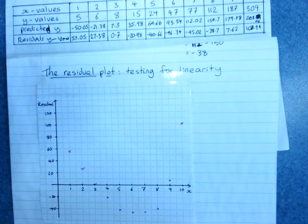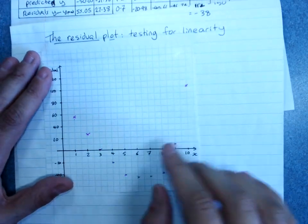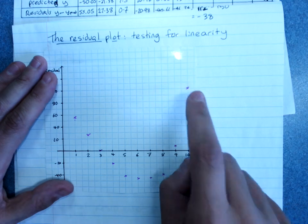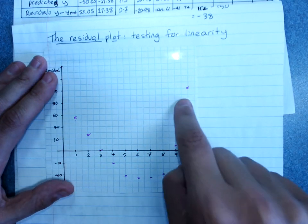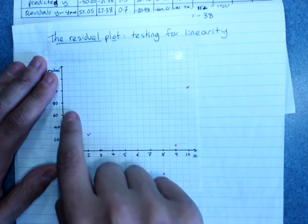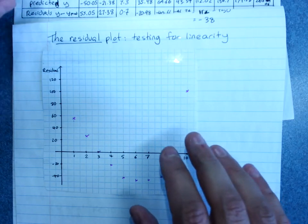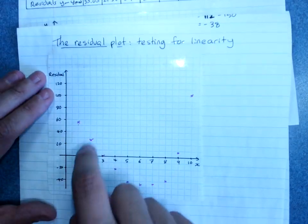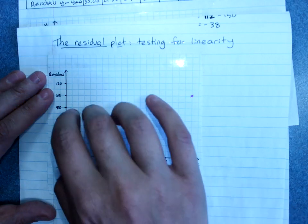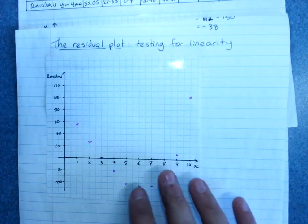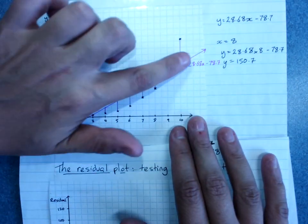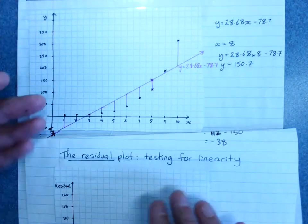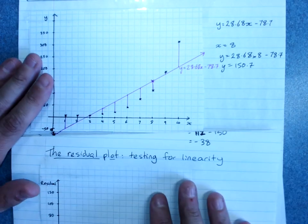The whole purpose is to see if there's a pattern in your residuals. If the residuals go above the line, curve down below, then above again — forming a curved pattern — that tells you the data isn't linear. If the residuals are scattered randomly above and below with no pattern, then the linear model is probably appropriate. So a curved residual plot signals nonlinearity, while a random scatter confirms linearity. That is residual analysis.